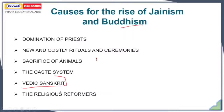The religious reformers became the reason behind the rise of Buddhism and Jainism because they started questioning the Vedic authority, the authority of Brahmins, the domination of priests, the rituals, and the ceremonies. People followed their cult and there was a rise in the followers of Jainism and Buddhism, and these particular religions were essentially established.